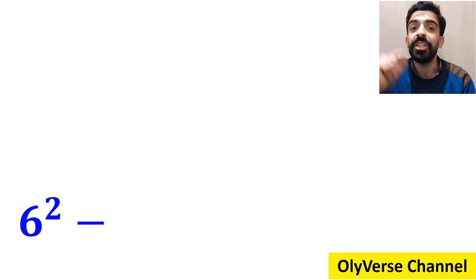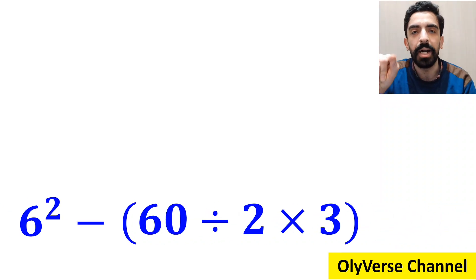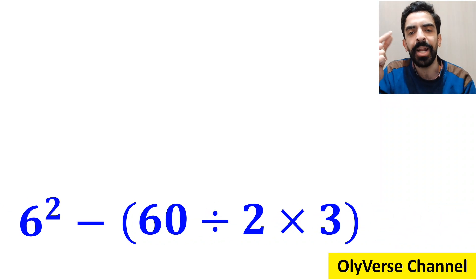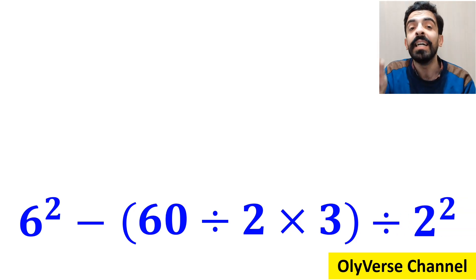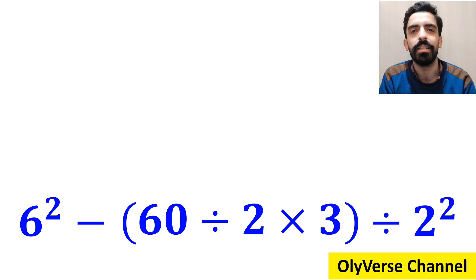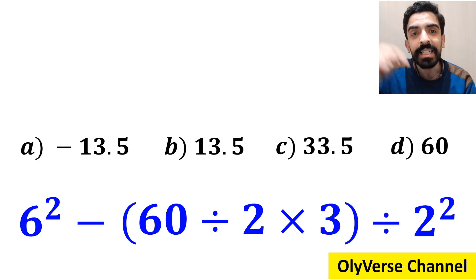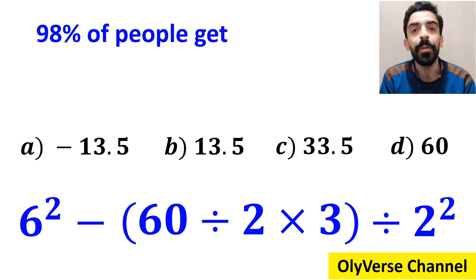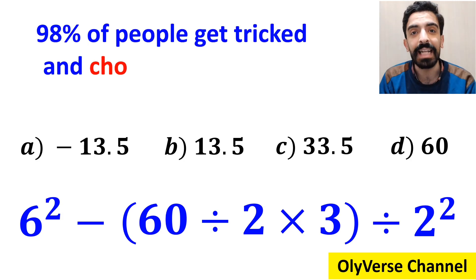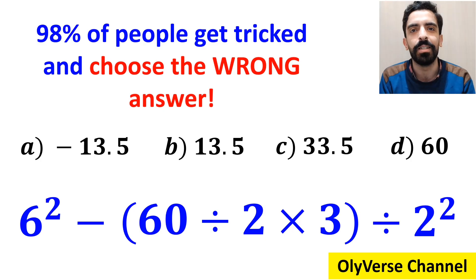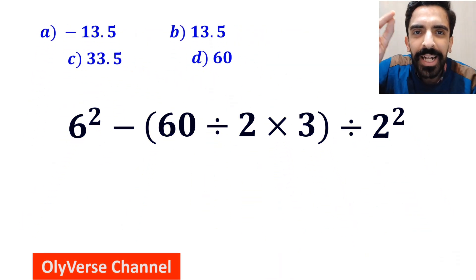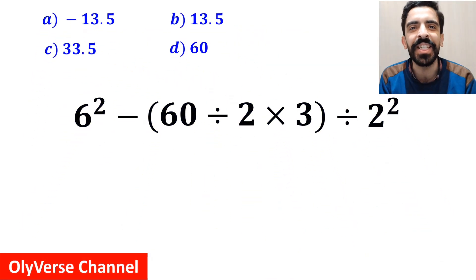What is the value of the expression 6 squared minus open parenthesis 60 divided by 2 times 3 close parenthesis, then divided by 2 squared? Which option do you think is the correct answer to this question? 98% of people get tricked and choose the wrong answer. Let's break it down and solve it together.